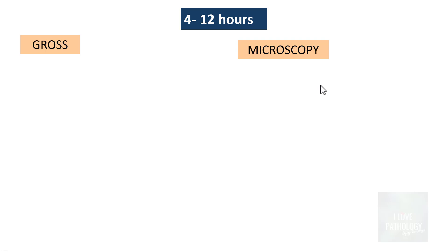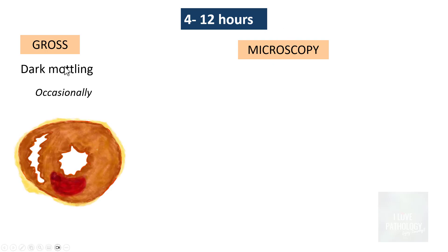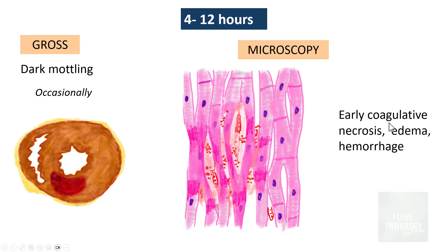At 4 to 12 hours, grossly you can find occasional mottling with some reddish discoloration due to hemorrhage into the area. Microscopically, you find features of early coagulative necrosis: the cytoplasm becomes more eosinophilic — more pink in color — the nuclei become paler, and there are darker contraction bands in the ischemic myocardium.